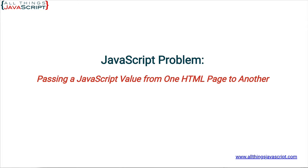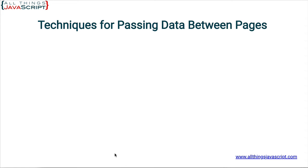Let's first look at the different ways that can be used to pass data from one HTML file to another. First off, we can use local storage. I've done an in-depth tutorial on this and will link to it in the description. This is one of the techniques I will show in this tutorial. I won't describe it in a lot of detail, but I will show the technique for doing it.